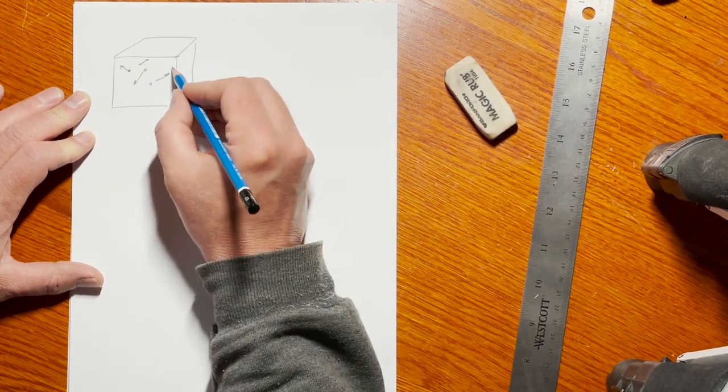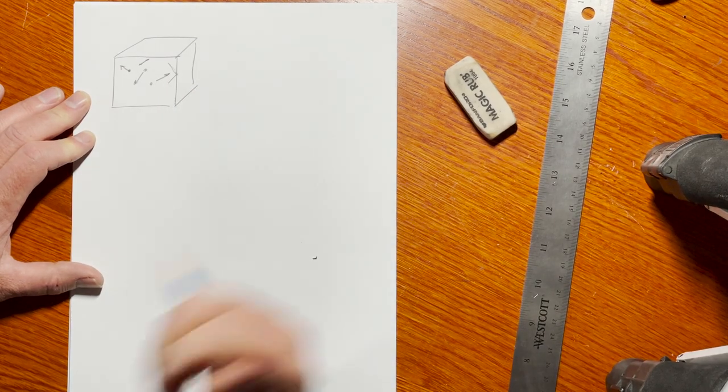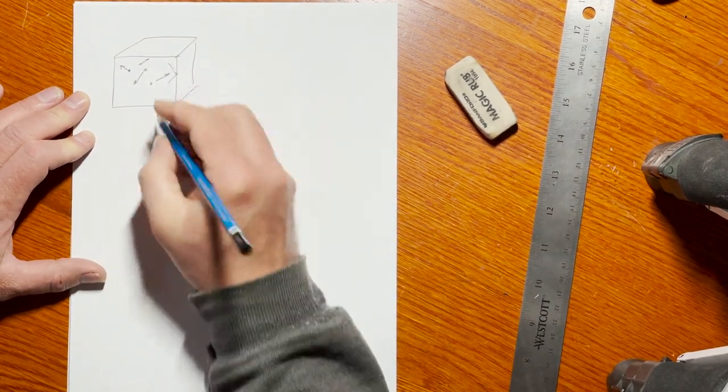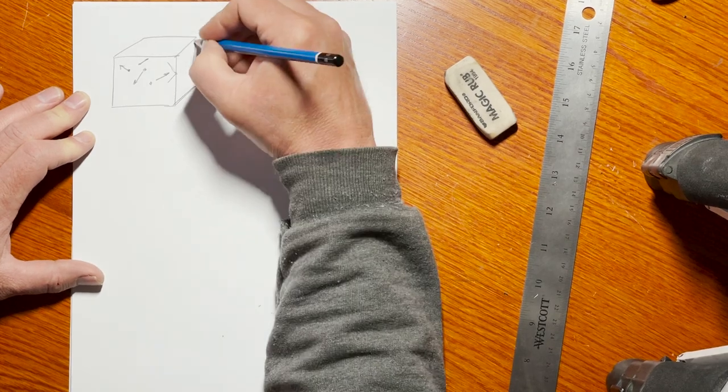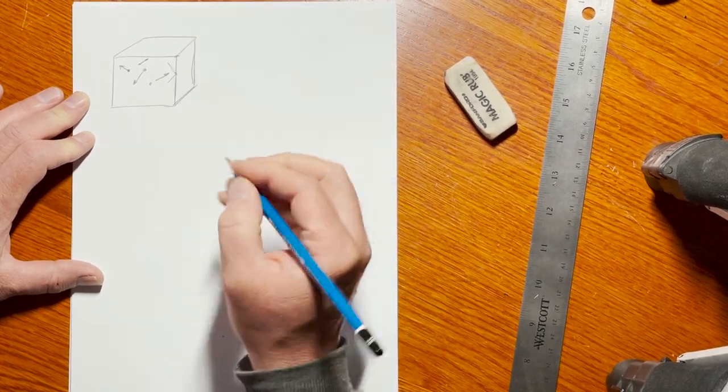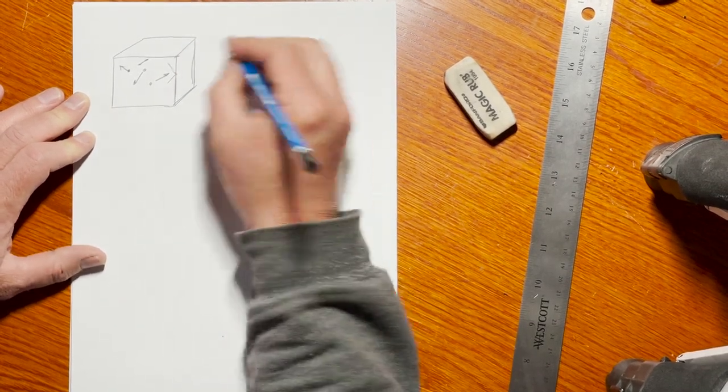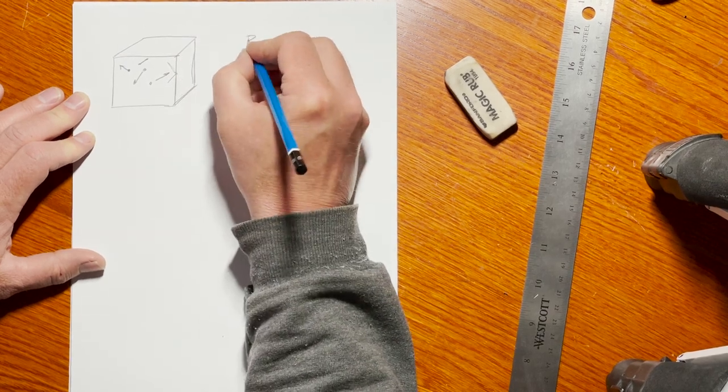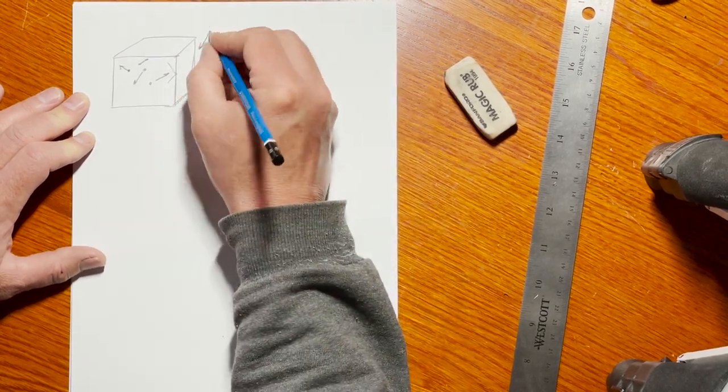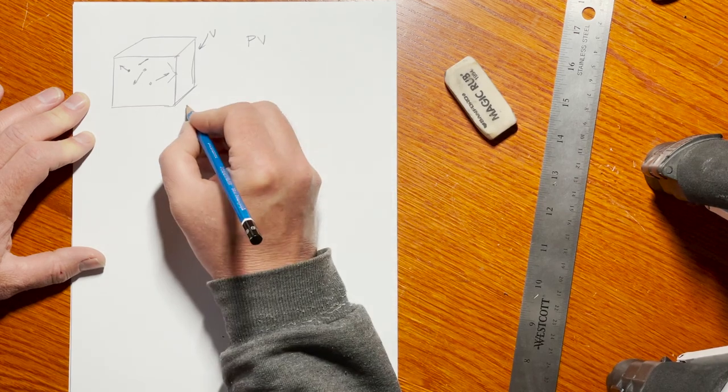When they bounce off the sides of this box, they exert a force. That force exerted over the area of the side of the box is something we call pressure. There's a relationship between the pressure exerted by the molecules, the volume of the box, and the temperature.